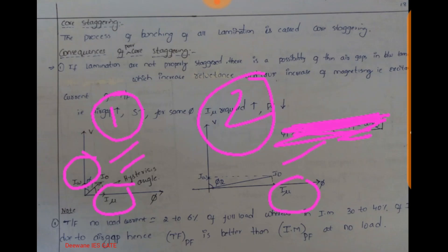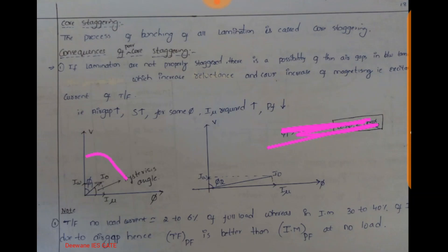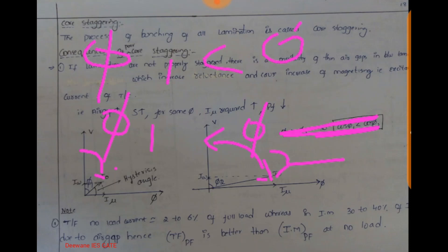Let us see the second observation. This is phi-1, the angle between V and i-naught. See the angle phi-2 here. Phi-1 is less than phi-2, so cos-phi-1 is greater than cos-phi-2. So if air gap increases: imu increases, iw remains same, i-naught increases, and power factor decreases. It is very important that during core staggering no air gap is left inside.